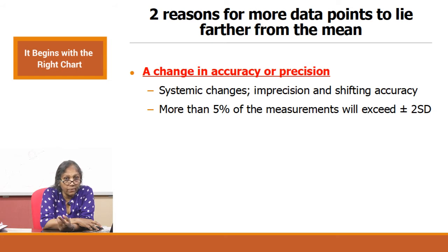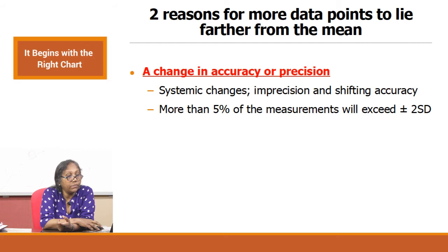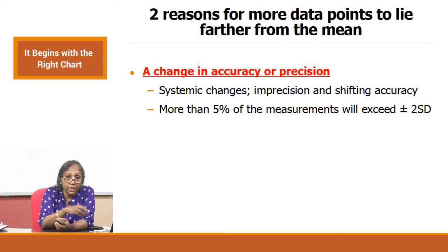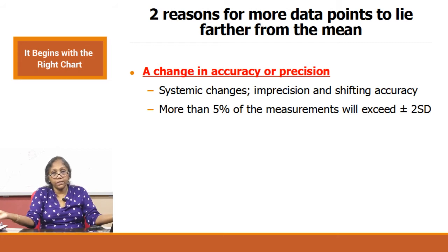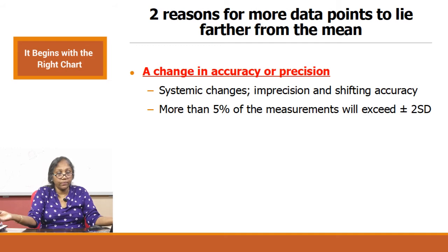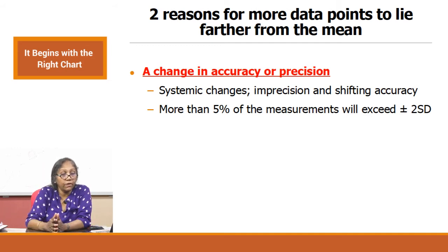To recap on the Gaussian: only 2.5 percent maximum points are allowed on each side of the Gaussian curve — 2.5 percent beyond your 2 SD limit on the plus side, 2.5 percent beyond your 2 SD limit on the negative side. Together, 5 percent outside plus or minus 2 SD is all that is allowed.